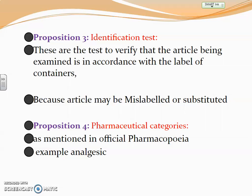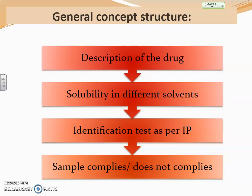Next, the purpose of performing the identification test is to identify mislabeling and to identify the compound's pharmaceutical category as per official pharmacopoeias, such as analgesic. As far as sulfamethoxazole is concerned, the drug category will be antibacterial, because sulfa drugs are mostly antibacterial. The general concept includes description, solubility profile, identification test, and then a conclusion on whether the sample complies with the IP or not.